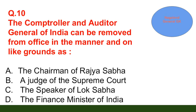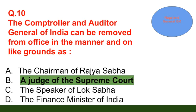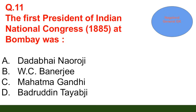Question number 10: The Comptroller and Auditor General of India can be removed from office in the manner and on the same grounds as — option A: the Chairman of Rajya Sabha; option B: a judge of the Supreme Court; option C: the Speaker of Lok Sabha; option D: the Finance Minister of India. The correct answer is option B — a judge of the Supreme Court.